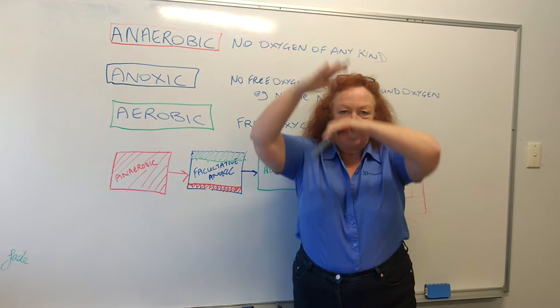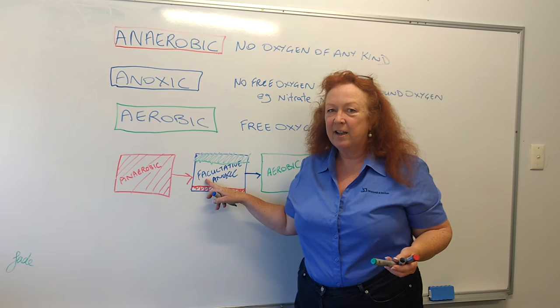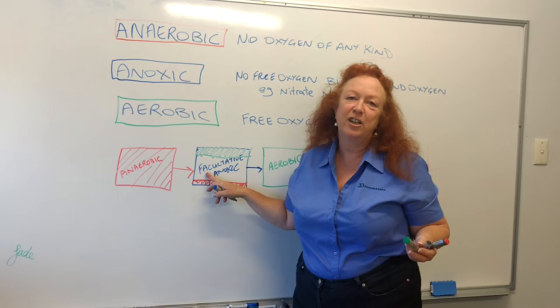And then we'll have a facultative or anoxic zone in the middle, which will move up and down depending on whether it's daytime or nighttime. In that zone, the bugs will breathe oxygen if it's there, but if it's not, they can swap over and start using bound oxygen — things like nitrates, sulfates, etc. — to allow them to do their metabolism.